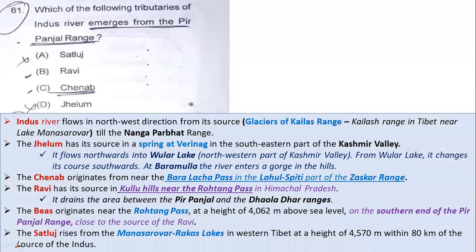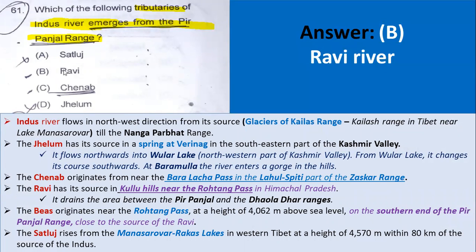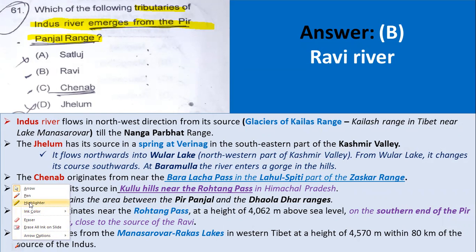Question 61: Which of the following tributaries of the Indus River emerges from the Pir Panjal range? The Indus River tributaries include the important rivers — Brahmaputra, Ganga, Kaveri, Godavari — you should know these. The answer is Ravi River. Satlaj and Indus both come from the Tibet region, and Jhelam comes from the Jammu-Kashmir region, from Wular Lake.